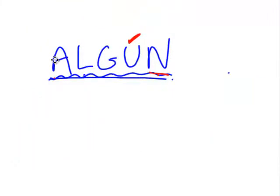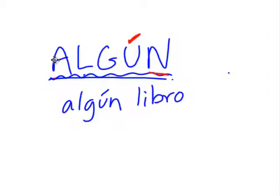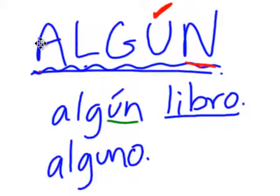So, just like we would say algunas sillas, I would say algún libro. ¿Tienes algún libro? ¿Hay algún libro por ahí? Sí, hay alguno. Same thing — when there's a noun, you see that part that looks like the un: algún libro. When there's no noun, it becomes alguno. ¿Algún libro? Alguno. Sí, hay alguno por ahí.